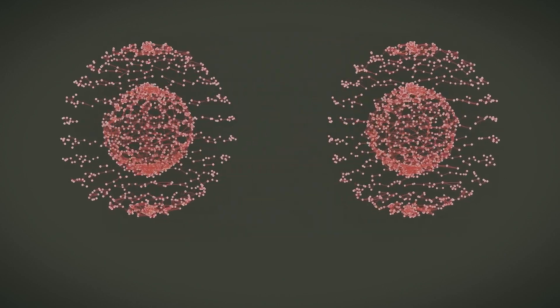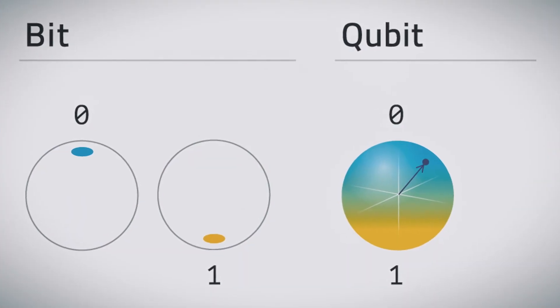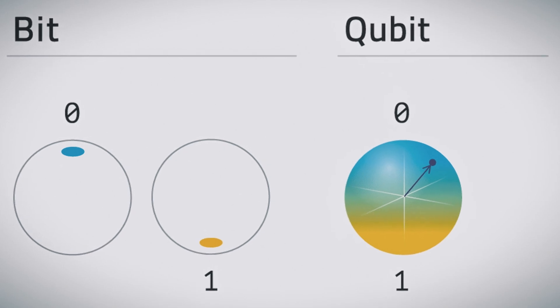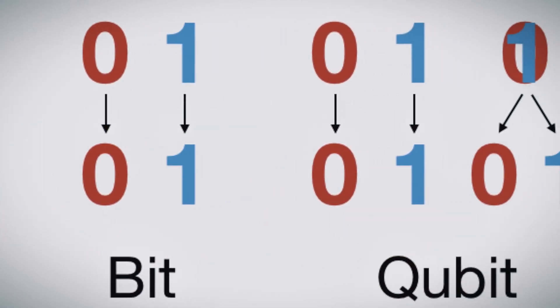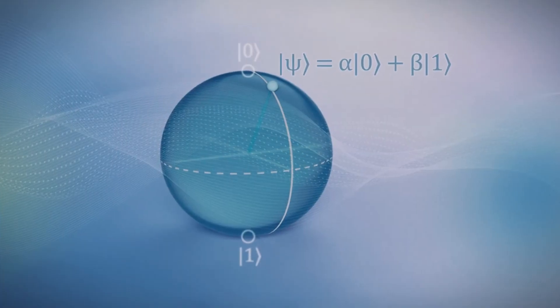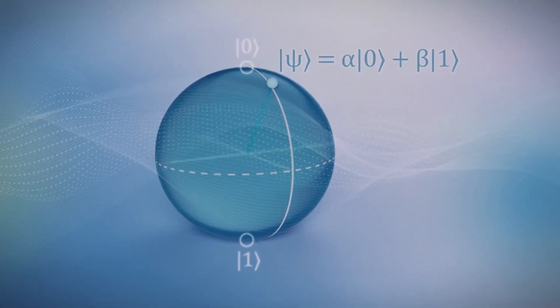These futuristic marvels use qubits, a kind of superbit that can be a zero, a one, or hold on to your hats, both at the same time, thanks to a quirky quantum twist called superposition.